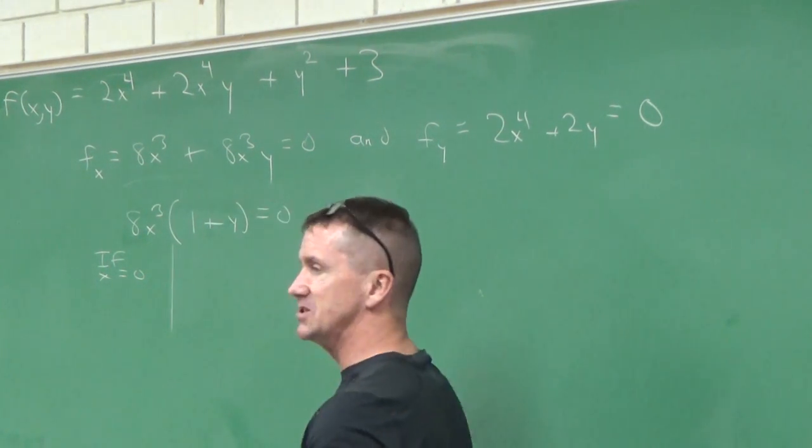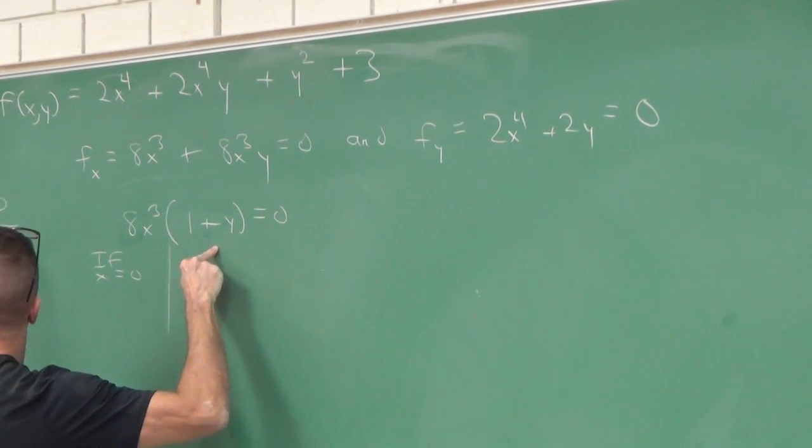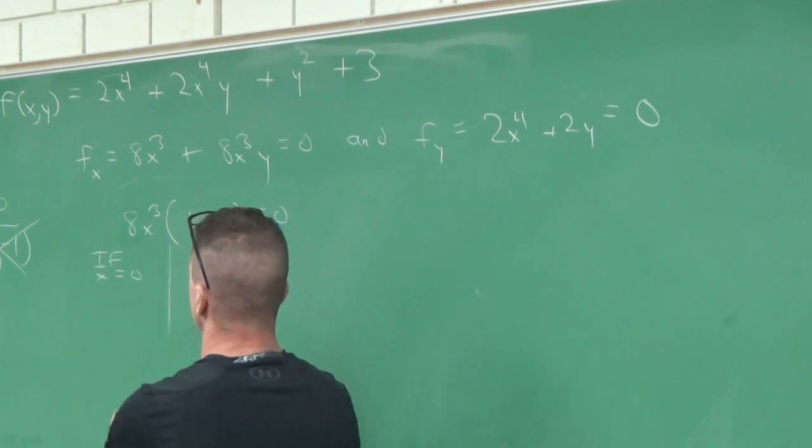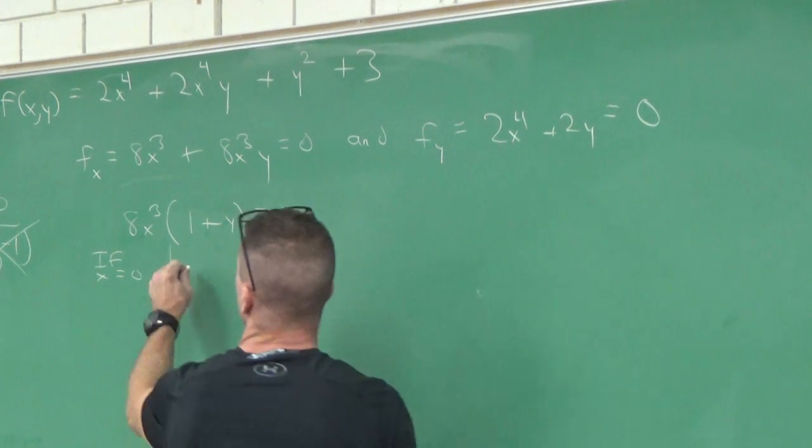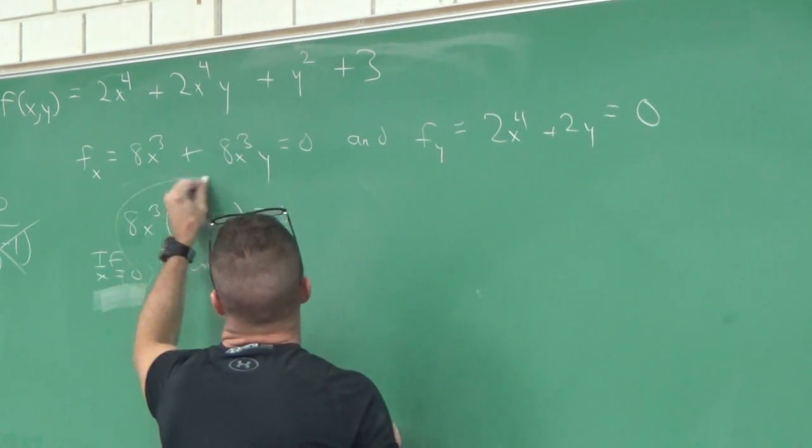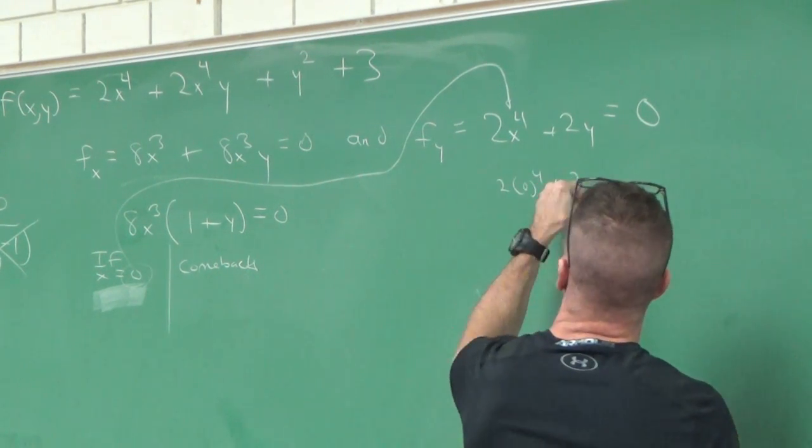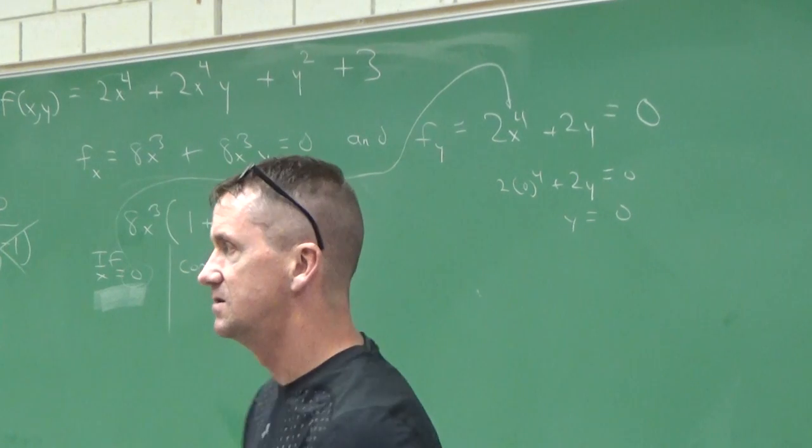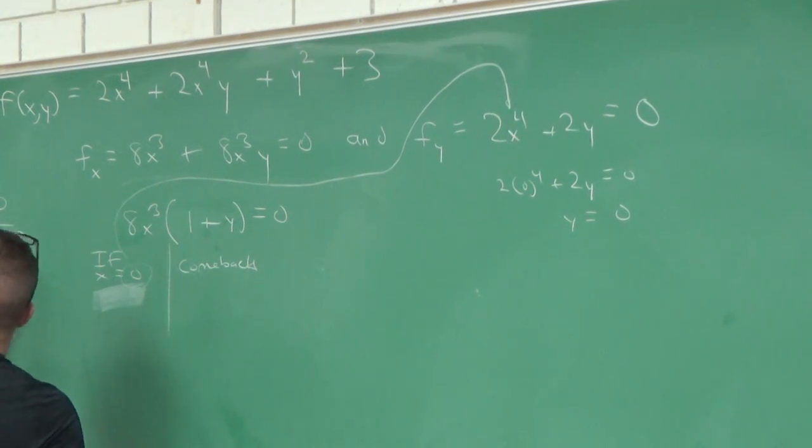I don't want you to think your pair is (0,-1). That would be wrong. These are separate cases. We'll come back to y = -1. What we're doing right now is exploring x equals zero. If x equals zero, what do you get out of fy? 2(0)^4 + 2y = 0, so y equals zero. There is our first critical point. If x equals zero, then y equals zero. That point makes both of these equations equal zero. That's our first one.